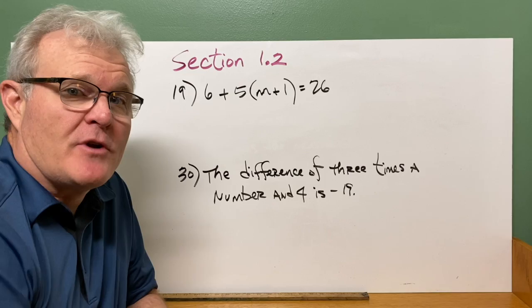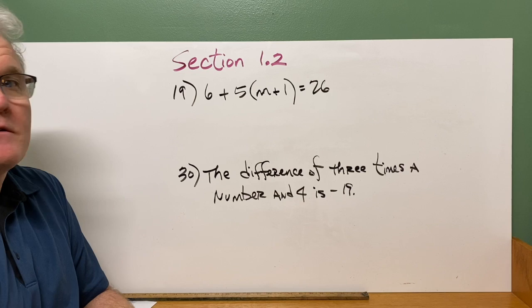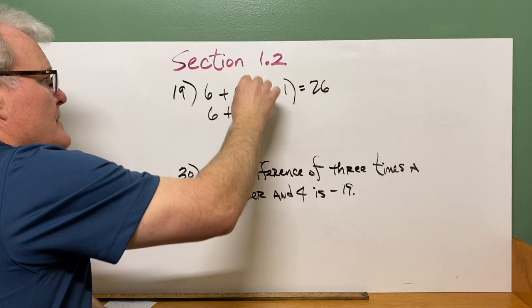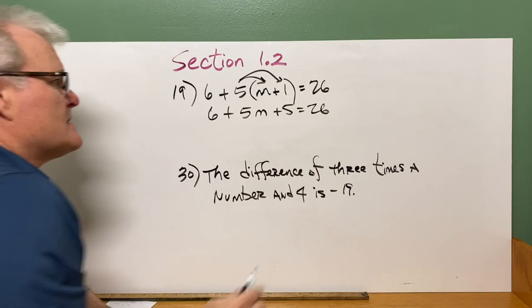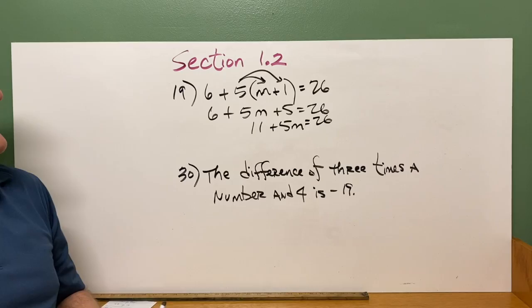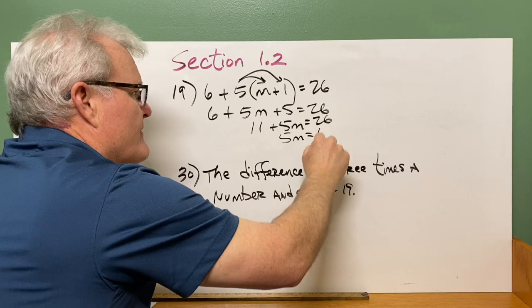I want to go through a couple of problems with you guys from section 1.2, which was solving multi-step equations. So problem 19 from your assignment looks like this. So in order to solve this, remember, you've got to first take care of parentheses. So on a problem like this, we're going to do 6 plus. We're going to distribute that 5. So it's going to be 5m. And then 5 times 1 is 5 equals 26. You've got to get your like terms together. So on like terms on this side, 6 and 5 add up to 11. So we're going to have 11 plus 5m is 26. We have to move that 11 over. We're going to isolate the m. So remember to isolate the m here, we're going to have 5m is equal to, if I subtract 11 from both sides, that's going to give us 15. Finally divide by 5, we're going to get m is equal to 3.